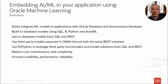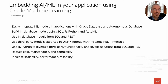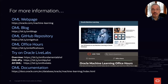In summary, when it comes to embedding AI and ML in your applications, you have multiple options with Oracle Machine Learning. You can build in-database models using SQL, R, Python, and AutoML interfaces, and use those models to make predictions or gain insights. You can use third-party models exported in ONNX format with OML Services, and deploy open-source R and Python-based solutions using third-party packages through interfaces convenient for application development. Overall, you can leverage AI and ML in your own applications through Oracle Database and Autonomous Database.